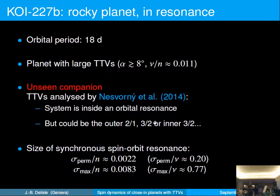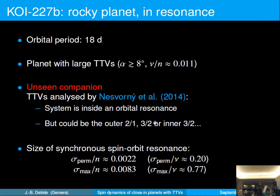Let's look at KOI 227b, a planet observed by the Kepler telescope with the transit method. Its orbital period is 18 days, and it has a large TTV amplitude of 8 degrees. The perturber is not observed and not transiting, so we can't determine its orbital properties directly. Using the TTVs, Nesvorný determined the system must be inside a mean-motion resonance — either the outer 2:1, outer 3:2, or inner 3:2 — though the exact one could not be identified. As discussed, we don't need to know the exact orbital dynamics because we have access to alpha and nu, making it roughly equivalent across those solutions.